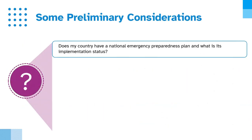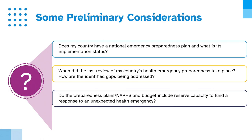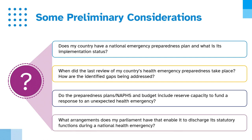Inquiries into the extent to which health emergency preparedness takes into account the differentiated impact of emergencies on men and women and their impact on vulnerable groups. Does my country have a national emergency preparedness plan and what is its implementation status? When did the last review of my country's health emergency preparedness take place? How are the identified gaps being addressed? Do the preparedness plans, national action plans for health security and budget, include reserve capacity to fund a response to an unexpected health emergency? What arrangements does my parliament have that enable it to discharge its statutory functions during a national health emergency?